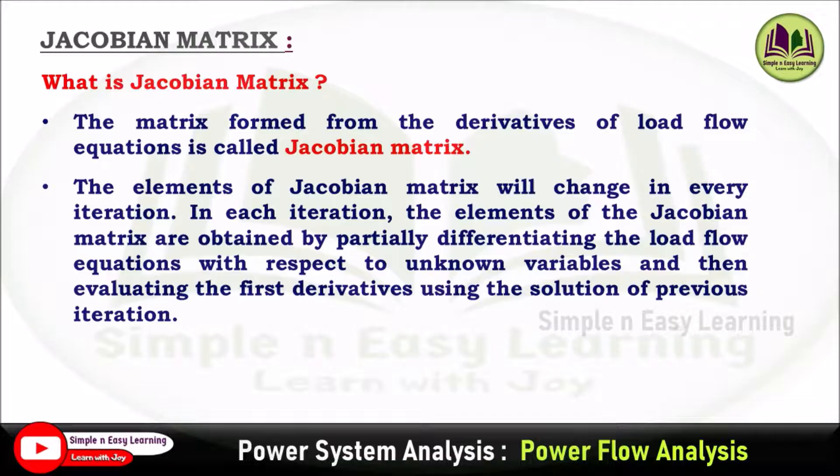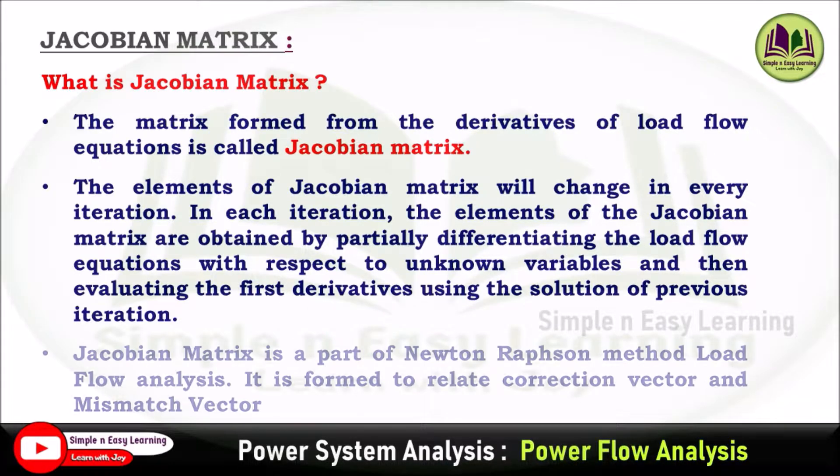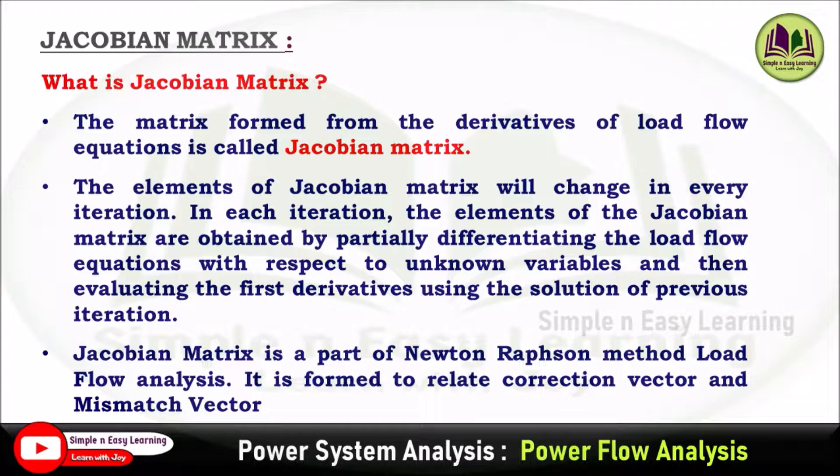As we know in the load flow solution there are four variables: magnitude of voltage and the phase angle δ, real power and reactive power. Based on the known quantities we need to obtain the load flow equation with respect to the unknown variables. This Jacobian matrix is a part of Newton-Raphson method load flow analysis, and this matrix is formed to relate correction vector and the mismatch vector.